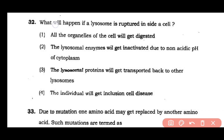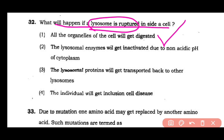Question number 32: What will happen if a lysosome is ruptured inside a cell? Option 1: all the organelles of the cell will get digested. Option 2: the lysosomal enzymes will get inactivated due to non-acidic pH of the cytoplasm. Option 3: the lysosomal protein will get transported back to other lysosomes. Option 4: the individual will get inclusion cell disease. The answer is option 1 — if a lysosome is ruptured inside a cell, the hydrolytic or digestive enzymes present will digest all the organelles of the cell.